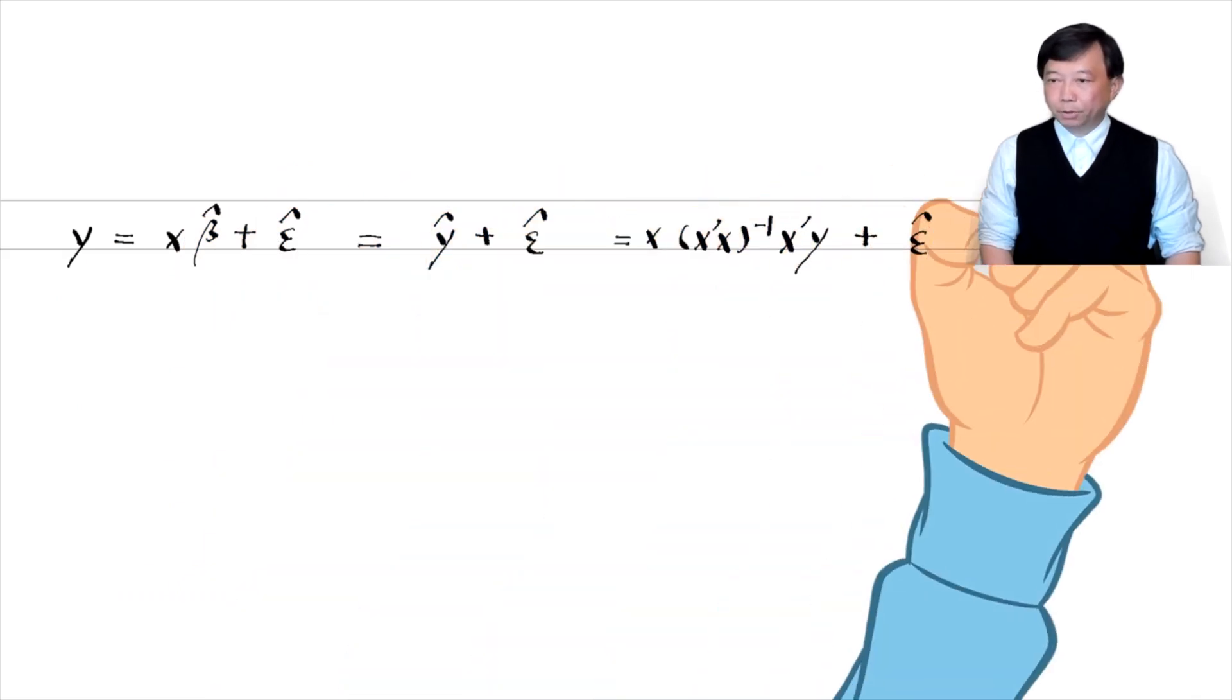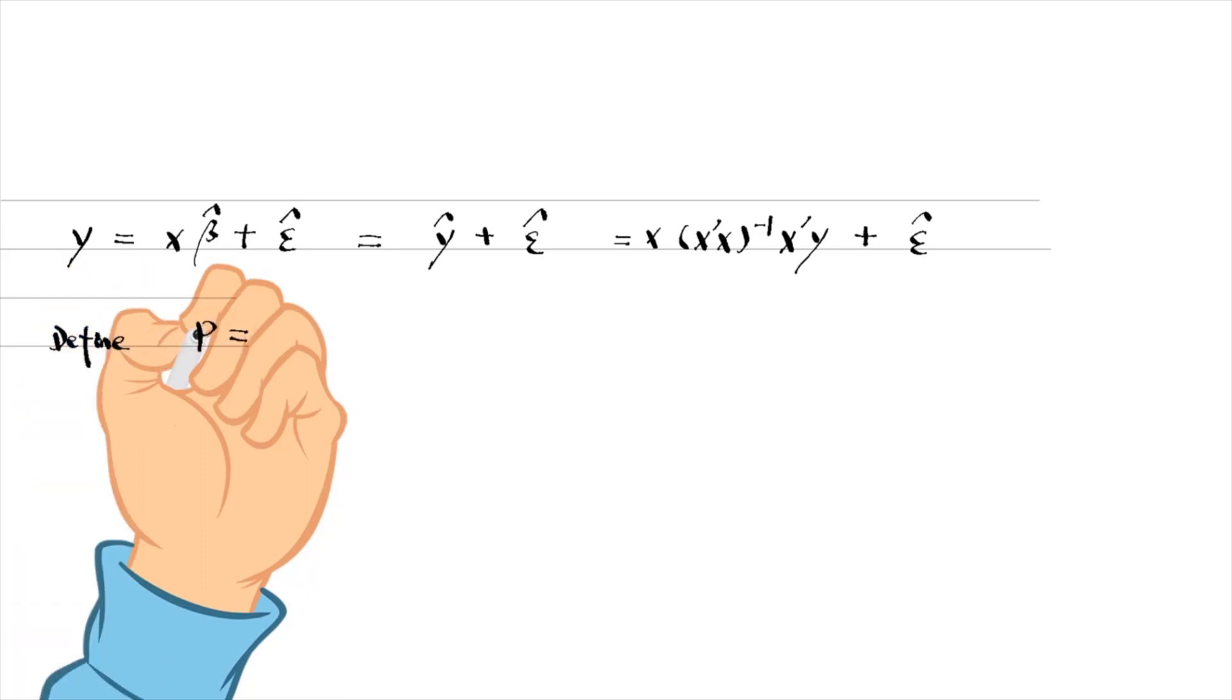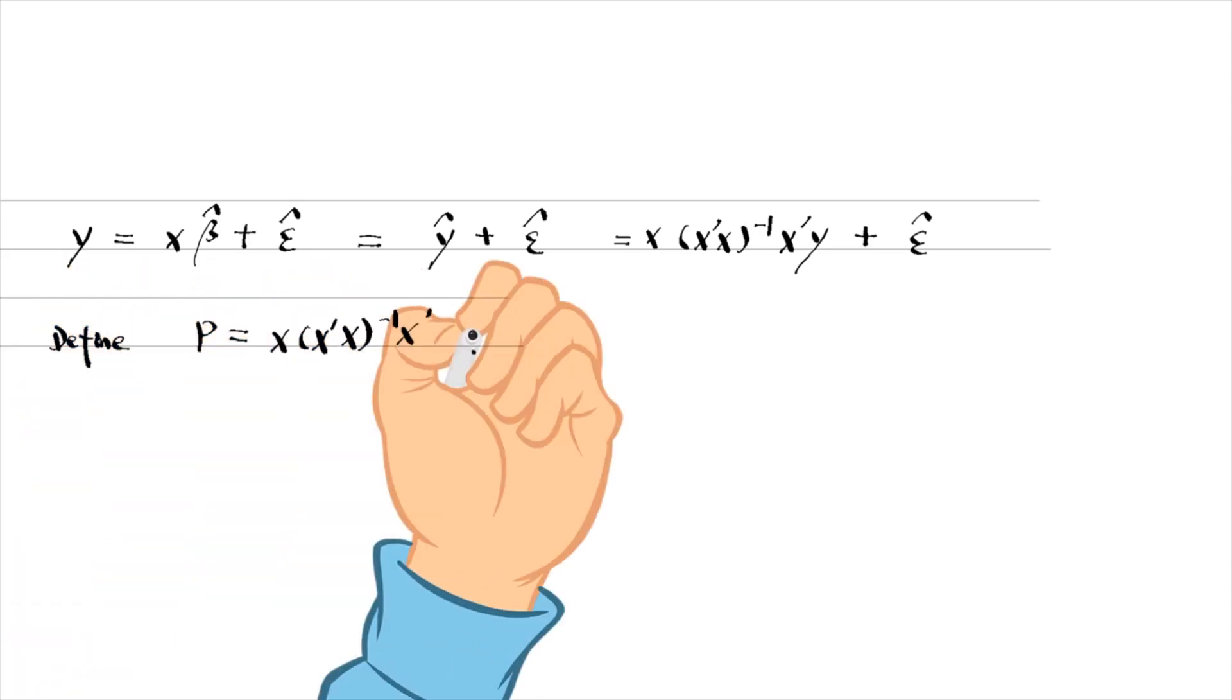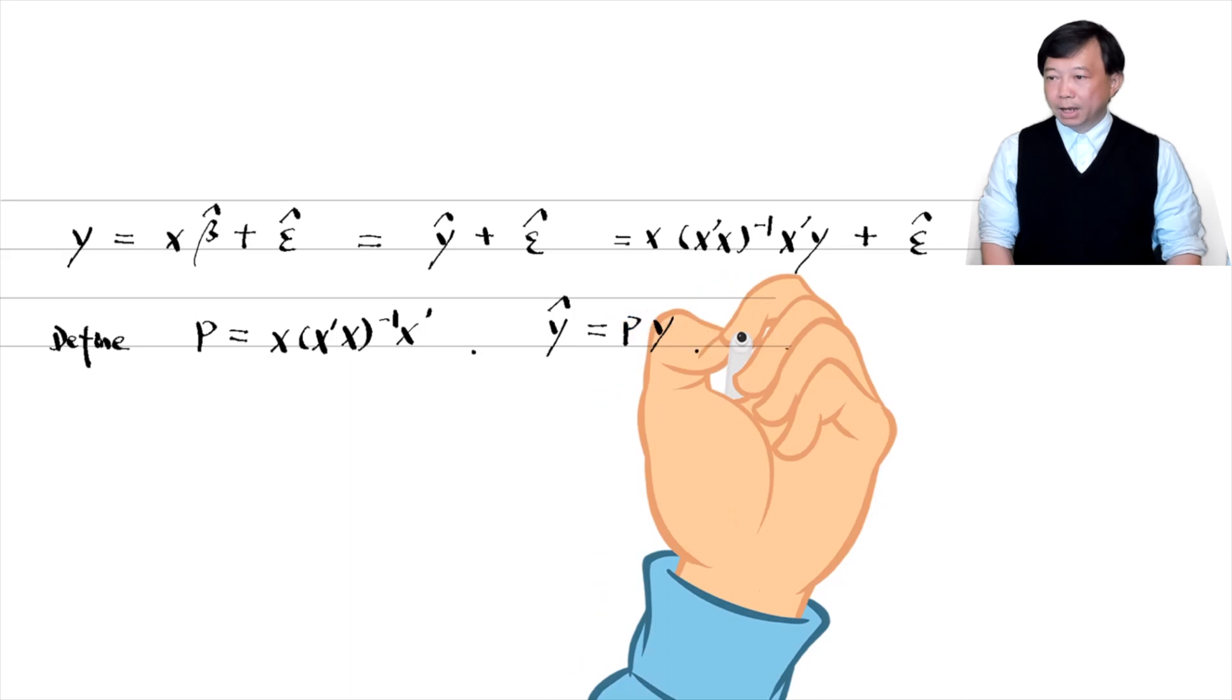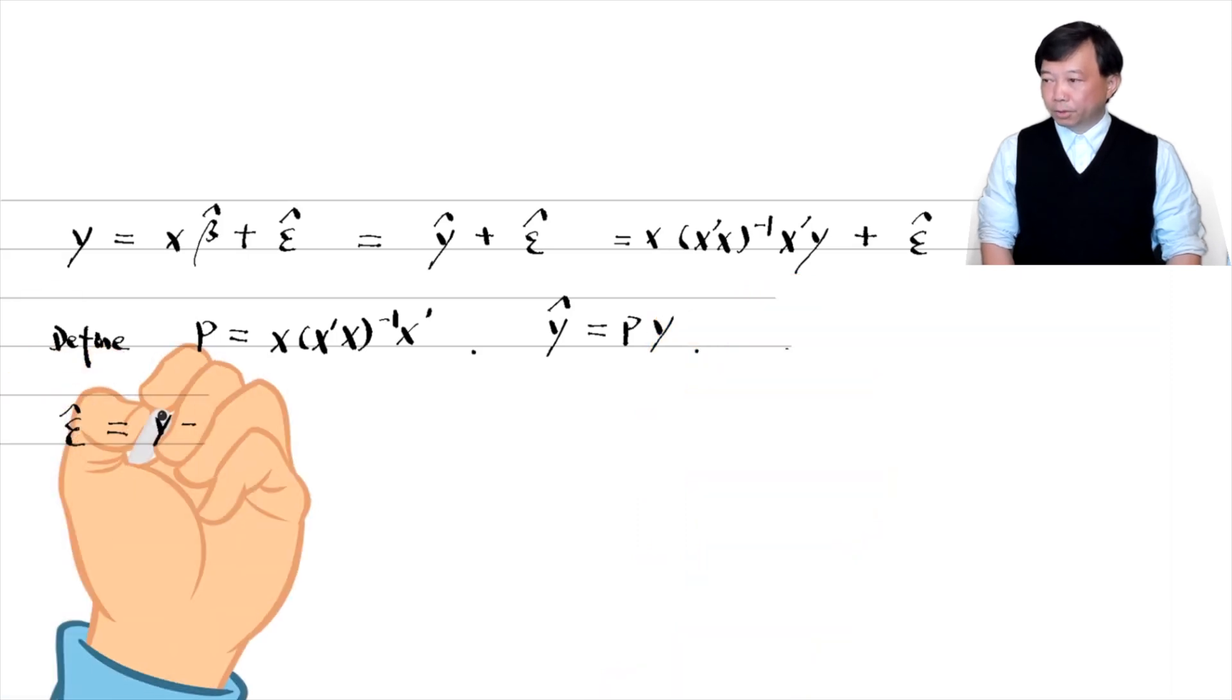Define a matrix P. The fitted value y hat equals y pre multiplied by P. Define another matrix M.